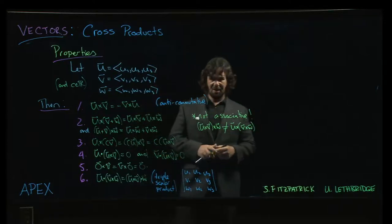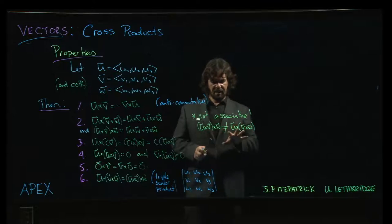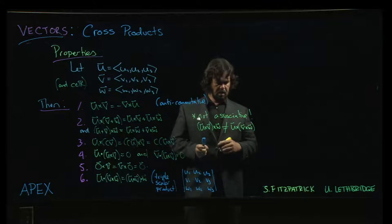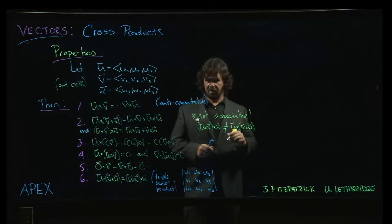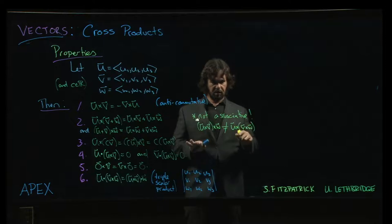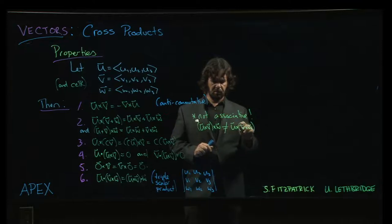There is an identity that you can write down for these sort of triple vector products. They're not going to come up for us at all in calculus. So I think we're not going to worry about it. We're not going to focus on it. There are some rare scenarios in physics where these triple cross products do show up and you want to be able to work with them.